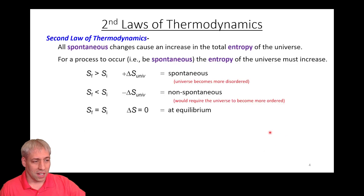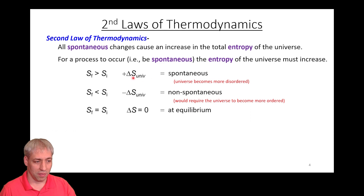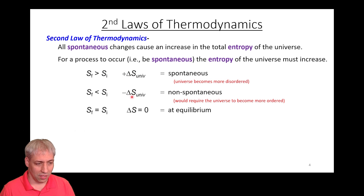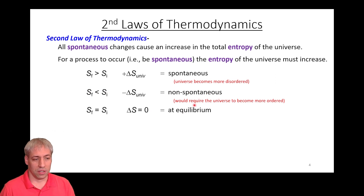We talked about the second law of thermodynamics: for a spontaneous process to occur, there must be an increase in entropy of the universe. So if delta S universe is positive — final minus initial is positive — it's spontaneous. If it's less than zero, the process is non-spontaneous. And if delta S equals zero, the system is at equilibrium.